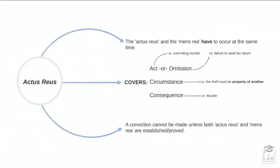First of all, let's look at the actus reus, or the external physical element. Both the actus reus and the mens rea have to occur at the same time — the person must intend the crime and do it concurrently. What the actus reus actually covers is the act or the omission, the circumstance surrounding it, as well as the consequence.